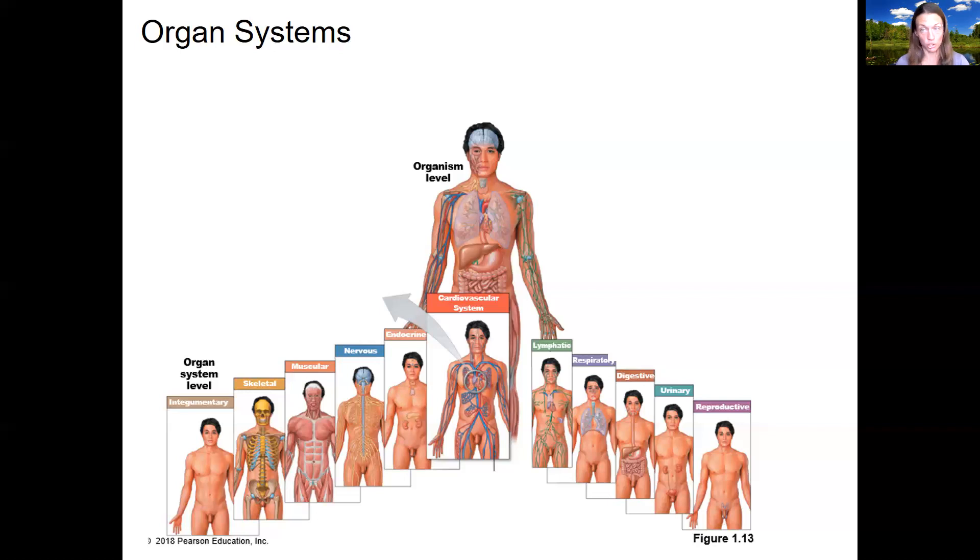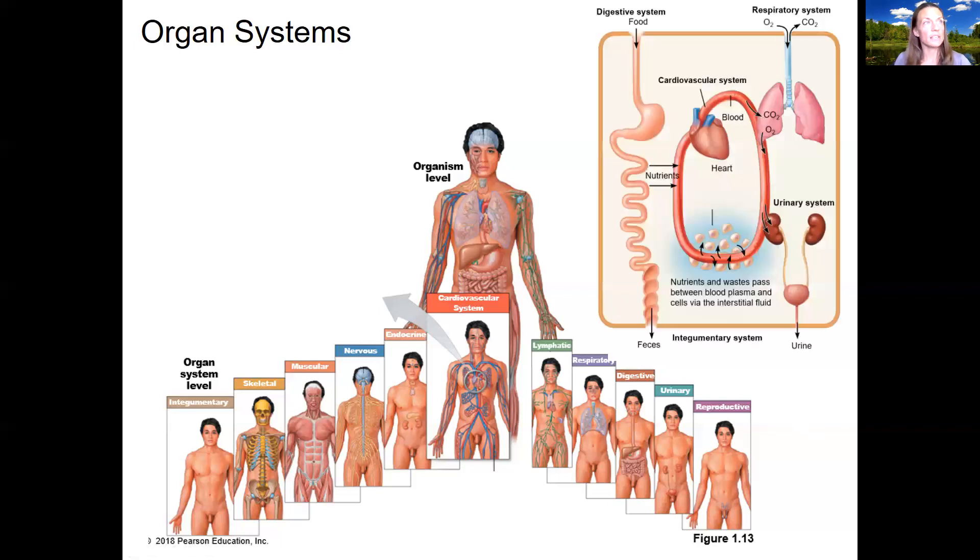So for example, blood pressure regulation, and that's done by cardiovascular, urinary, digestive, and nervous system. So here I got one example here before we go to the next slide on this integration idea.